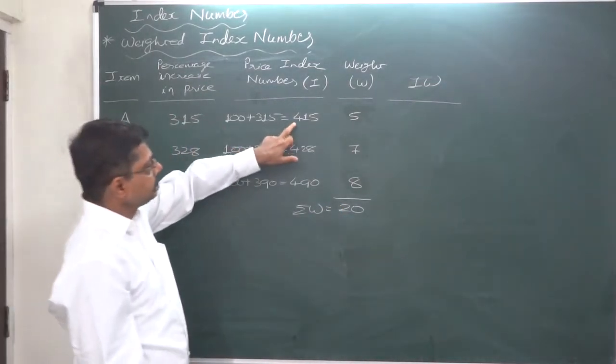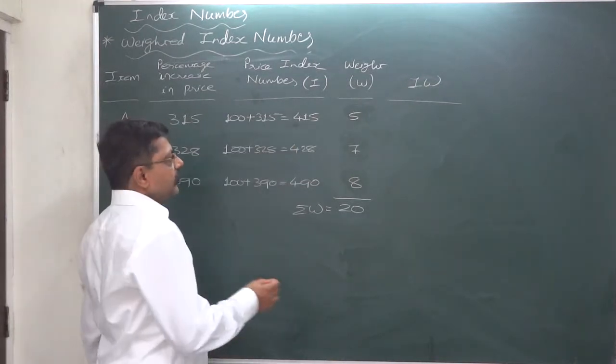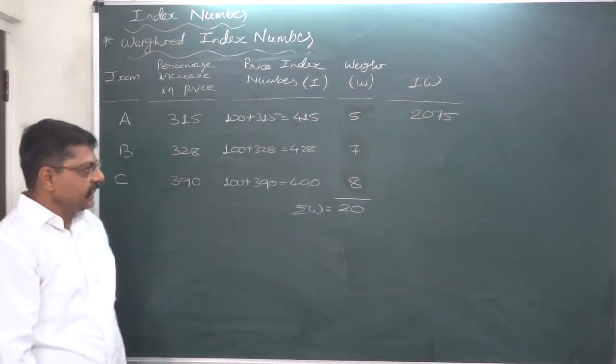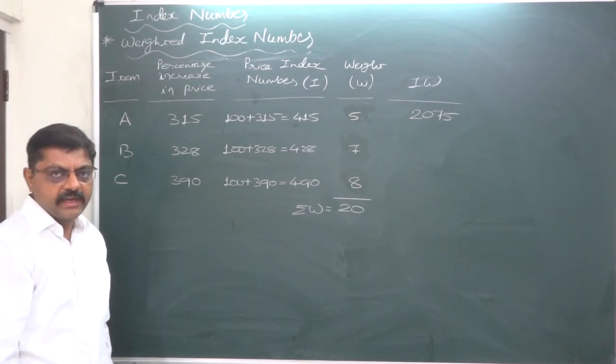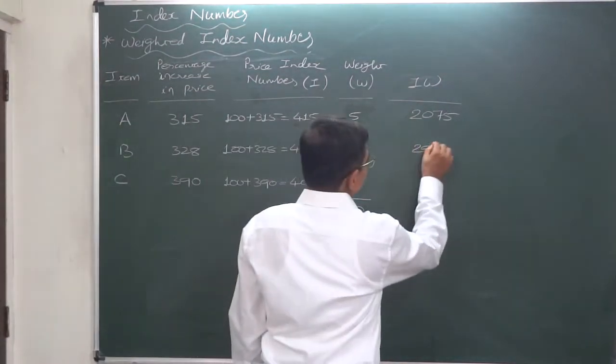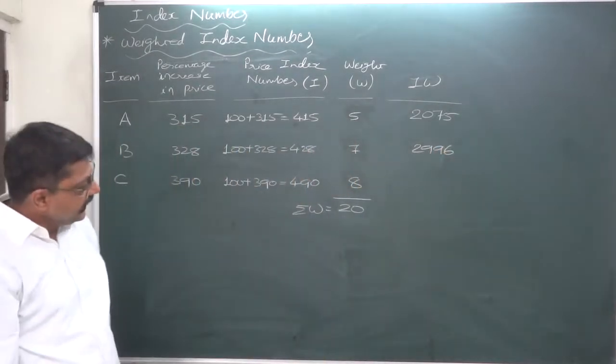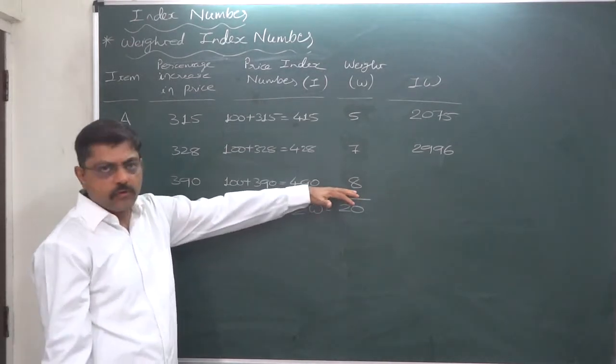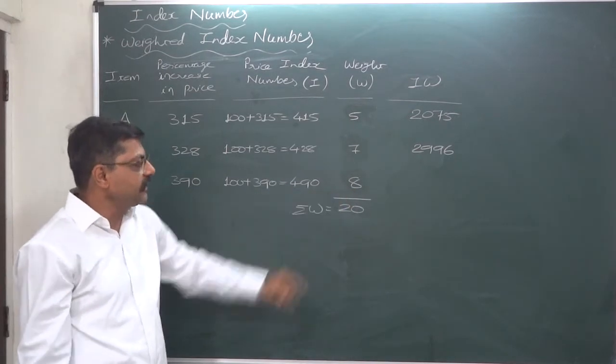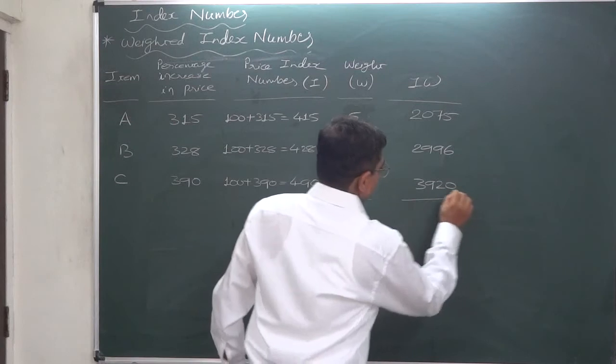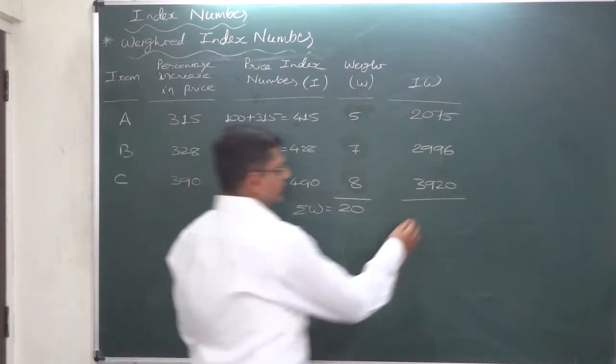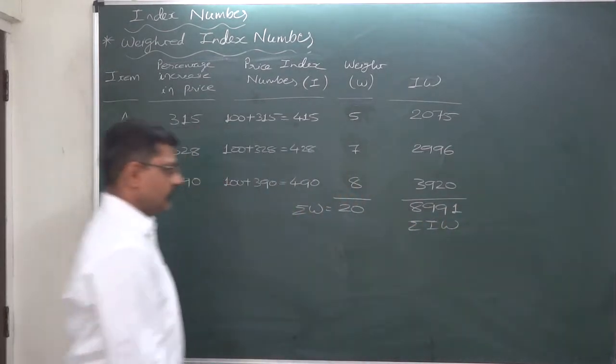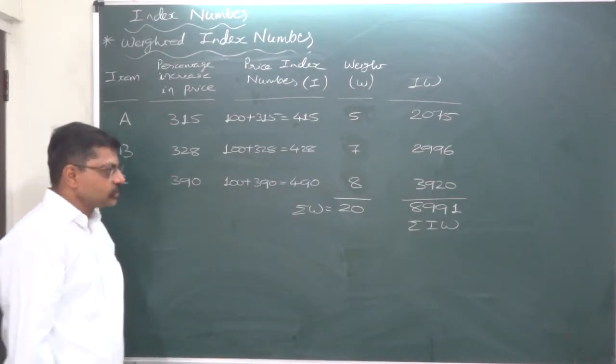The total of weights comes to 20. And now we need only I_w, I into w. 415 into 5 will be 2000 plus 75, 2075. 428 into 7, yes, 428 into 7, that comes to 2996. And 490 into 8, first you take 500 into 8, 4000, then subtract 10 into 8 from it, so 3920. Yes, and the total comes to 8991. Please confirm.